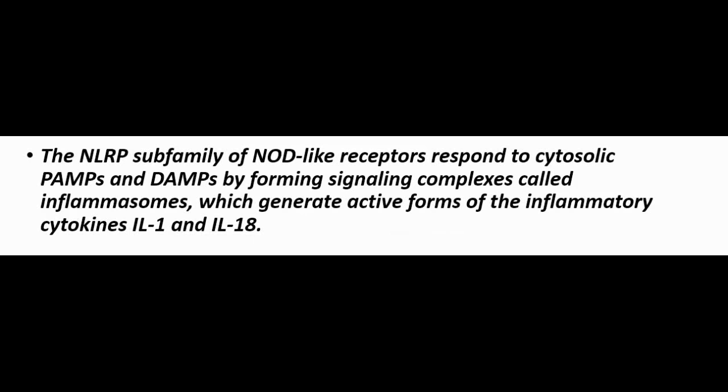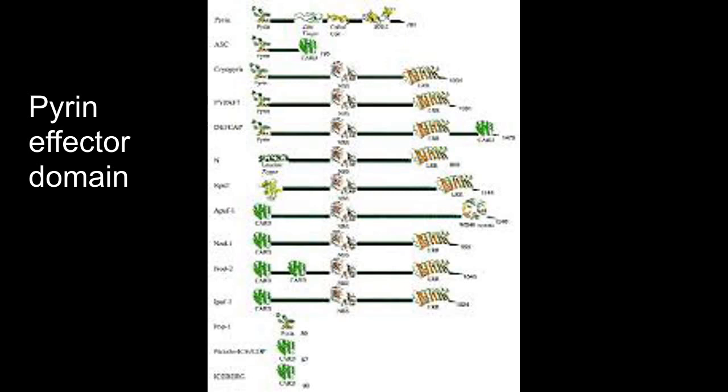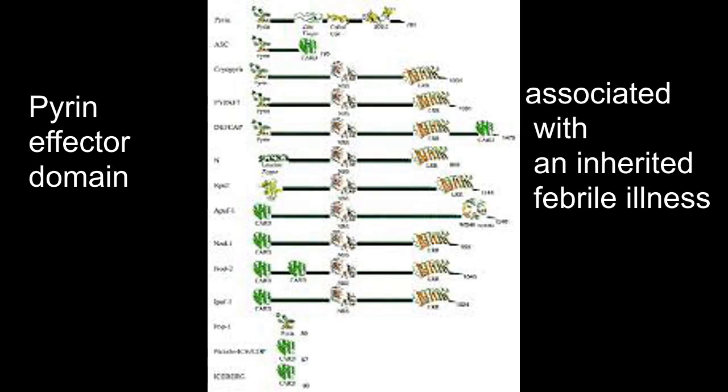The NLRP subfamily of NOD-like receptors responds to cytosolic PAMPs and DAMPs by forming signaling complexes called inflammasomes, which generate active forms of the inflammatory cytokines IL-1 and IL-18. There are 14 NLRPs (NLR family pyrin domain-containing proteins), most of which share a pyrin effector domain, named after the Greek root pyro meaning heat, because it was first identified in a mutated gene associated with an inherited febrile illness.